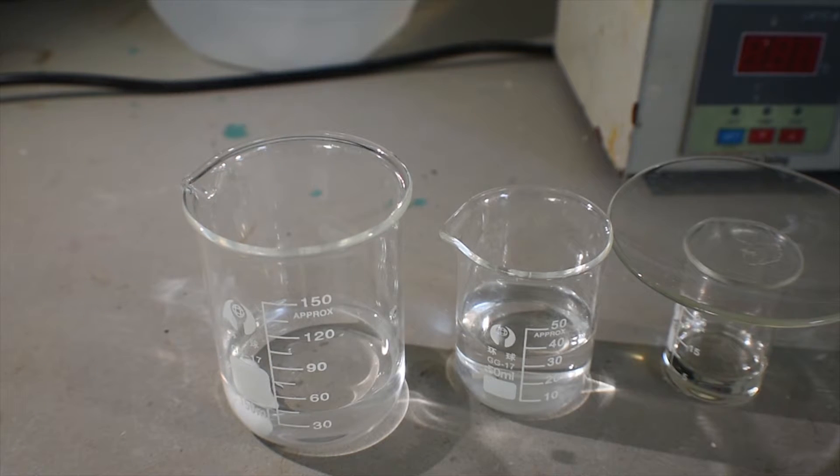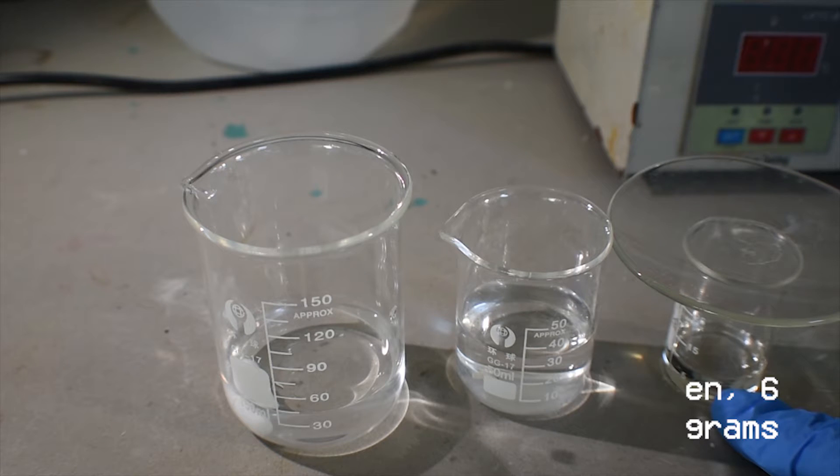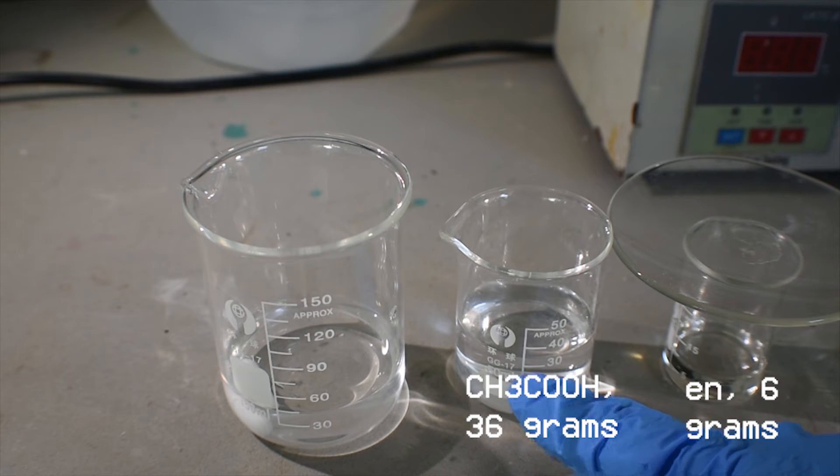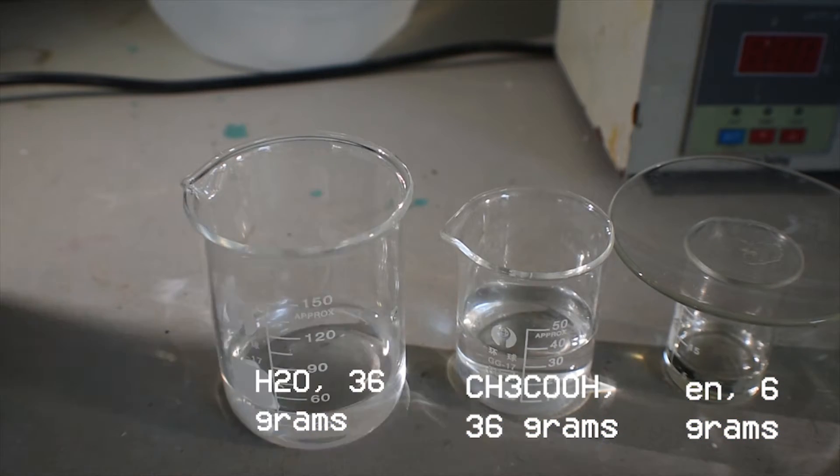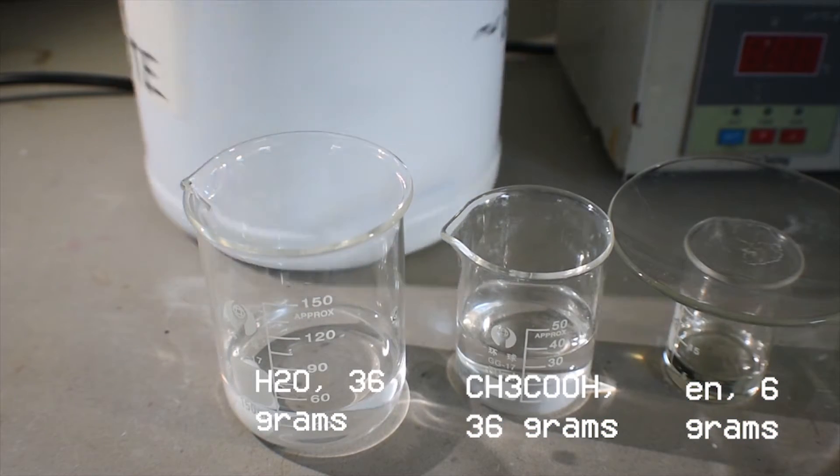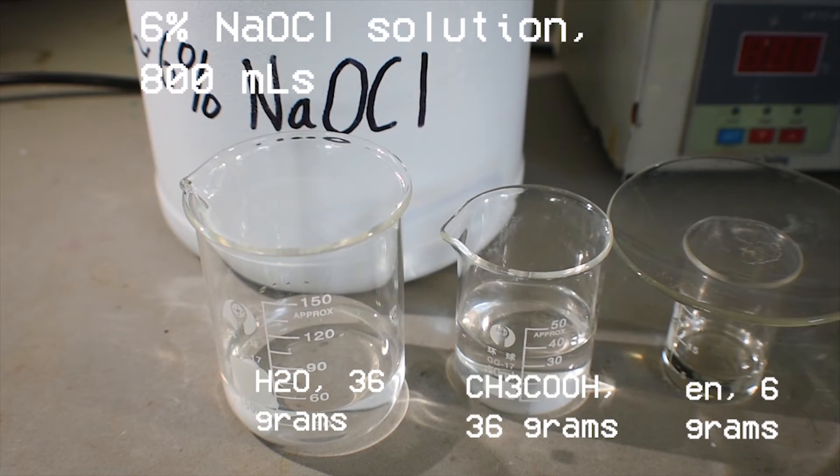So starting from right to left, we have six grams of ethylene diamine, 36 grams of glacial acetic acid, another 36 grams of distilled water, and you'll also need about 800 milliliters of 6% sodium hypochlorite. So, let's get to the process, shall we?